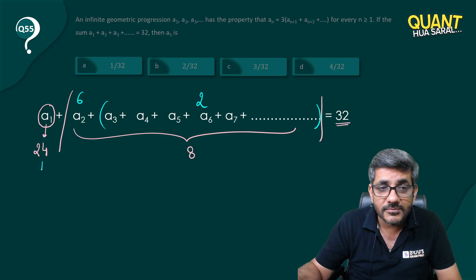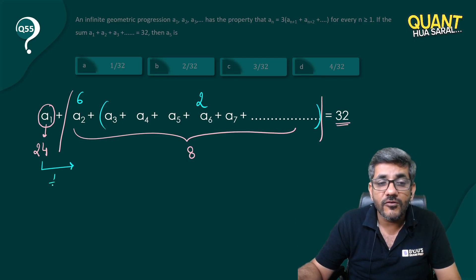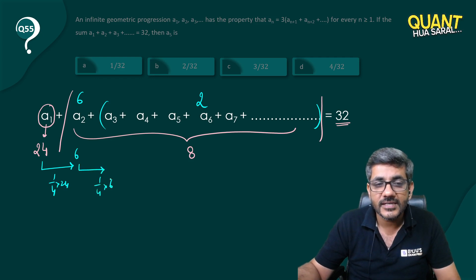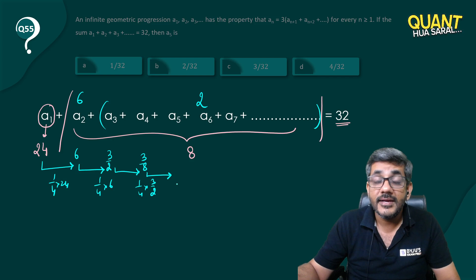Now, so ultimately what I see: a_2 comes out to be one-fourth of 24, which is equal to 6. So what will be a_3? a_3 will be equal to one-fourth of 6—one-fourth of 6 is 3/2. What will be a_4 then? a_4 would be one-fourth of 3/2, that is equal to 3/8. And what will be a_5? It will be one-fourth of 3/8, that is 3/32.